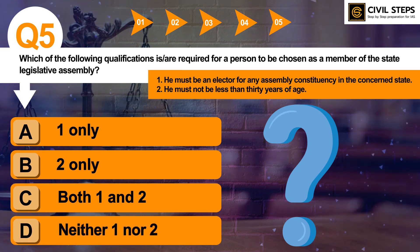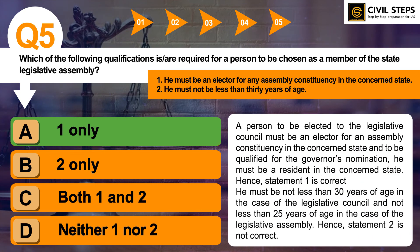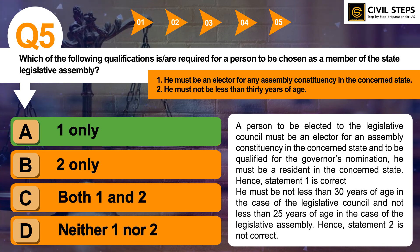You can write down your answer in the comment section. The correct answer of this question is Option A, 1 only. A person to be elected to the Legislative Council must be an elector for an Assembly constituency in the concerned state, and to be qualified for the governor's nomination, he must be a resident in the concerned state — hence Statement 1 is correct. About Statement 2, he must not be less than 30 years of age in the case of the Legislative Council, and not less than 25 years of age in the case of the Legislative Assembly — hence Statement 2 is not correct.